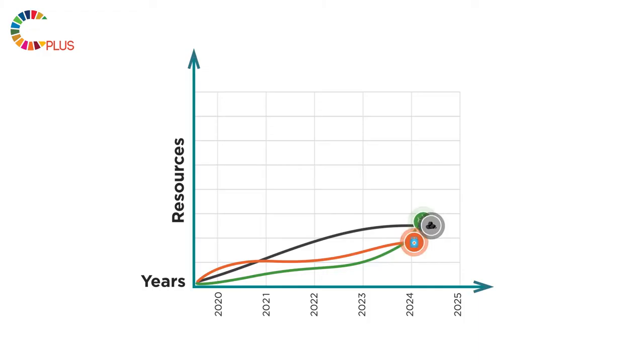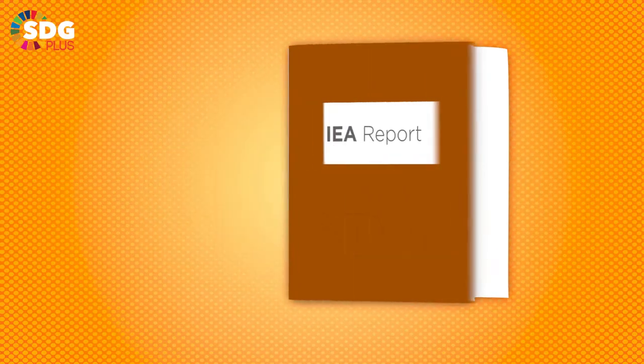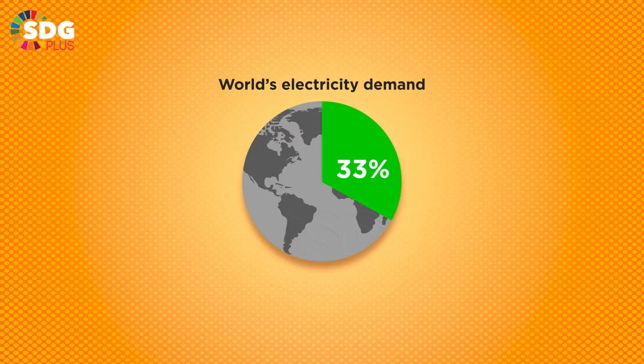And by 2025, renewables will overtake coal and become the largest source of electricity generation, and are expected to supply 33% of the world's electricity.